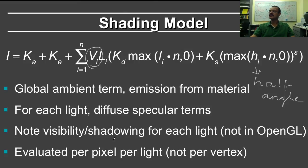So notice that the visibility shadowing for each light, which is not in OpenGL. Also notice that this is, of course, evaluated per pixel per light. And in OpenGL as well, in Homework 2, you wrote a fragment shader, so that's not new. But in the old days, OpenGL was evaluating per vertex, whereas in ray tracers, you always do it per pixel.